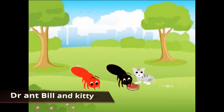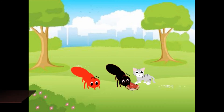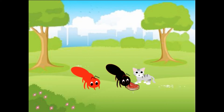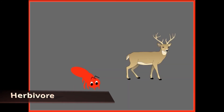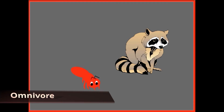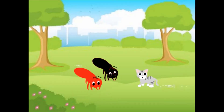Hey kitty, eat it! You are right, Bill — a kitty loves to eat meat. Oh really, big brother? Today I will tell you about different types of animals. Yes, brother, I want to learn about carnivore, omnivore, and herbivore. Herbivores are those who eat plants and not meat — some examples are deer. Omnivores eat all kinds of food, and one good example is a raccoon. Carnivores are those who eat meat, and one good example is a tiger. Look, brother — kitty eats the meat!